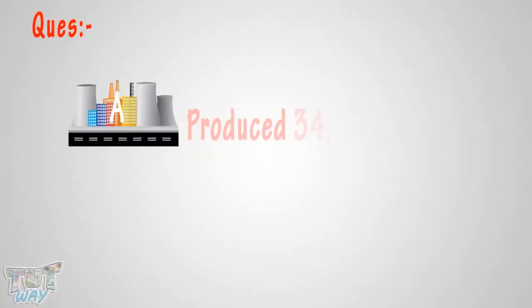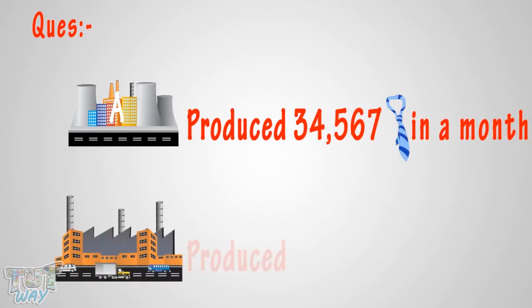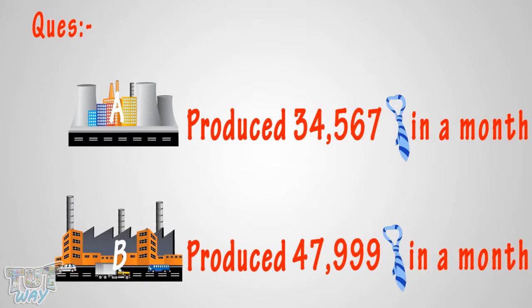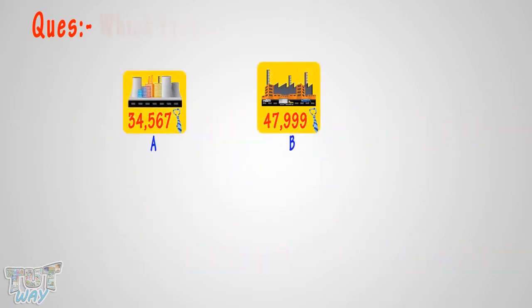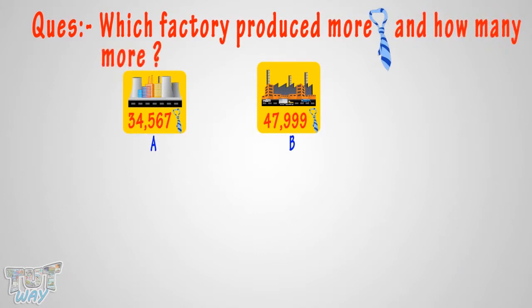Factory A produced 34,567 ties in a month and Factory B produced 47,999 ties in a month. Which factory produced more ties and how many more? Kids, let's find out the answer.